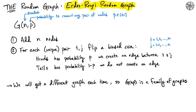With any random graph you need to specify what is fixed or known about the process, and then specify how nodes and edges get added to the graph. In this case we need to specify the number of nodes and a probability p, which determines the probability of connecting any two nodes — clearly a number between zero and one.